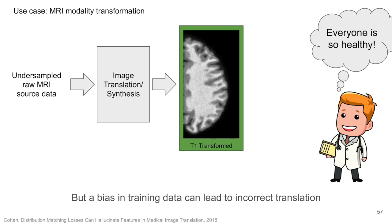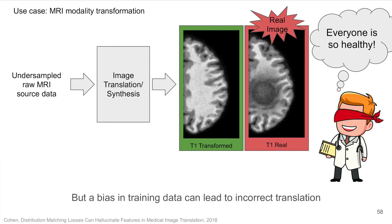Let's look at an example. Here, the source domain is a signal from an MRI that was undersampled to improve acquisition speed. Because of this, the doctor cannot inspect the source image. A model transforms this data into the target domain desired by the doctor, and the image looks realistic and healthy. The physician is convinced there is no need to investigate further. However, in reality, the model is biased and failed to create features which should have been present, such as a gigantic tumor.